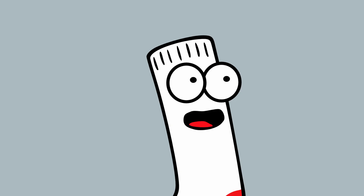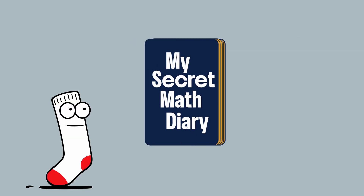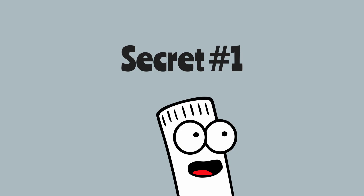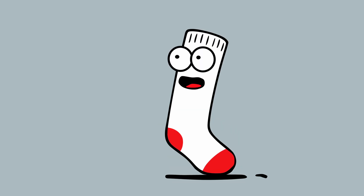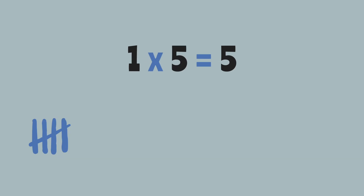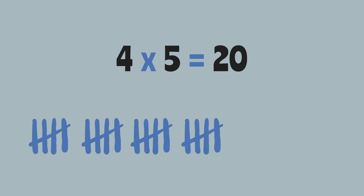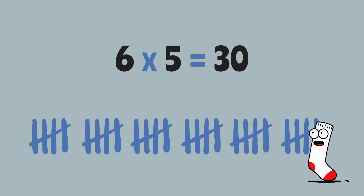Okay, so are you ready? First, there are two secrets to multiplying by five. The first secret is it's just counting by fives. Pretty easy, right? Five, ten, fifteen, twenty, twenty-five, thirty. You get it. You've been skip counting all along!